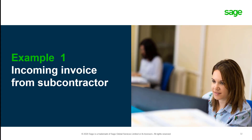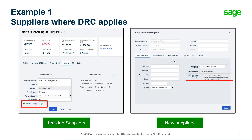First, let's take a look at how to record an invoice received from a subcontractor for work they've carried out on our behalf. Supplier records within Sage Business Cloud will be updated to include a reverse charge checkbox, visible on both existing suppliers and when creating a new supplier record. When a supplier has CIS details entered and the VAT number has been added, this checkbox will be automatically selected. Domestic reverse charge will then be applied on all future invoices, however this can be overridden on an invoice by invoice basis.